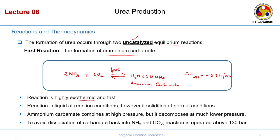Key features of the first reaction: it is exothermic and fast; the reaction is liquid at reaction conditions but solidifies at normal conditions. Ammonium carbamate forms at high pressure. If pressure is too low, it decomposes back into ammonia and CO₂, which is of no use. To avoid dissociation of carbamate back into ammonia and carbon dioxide, the reaction is always operated above 130 bar.